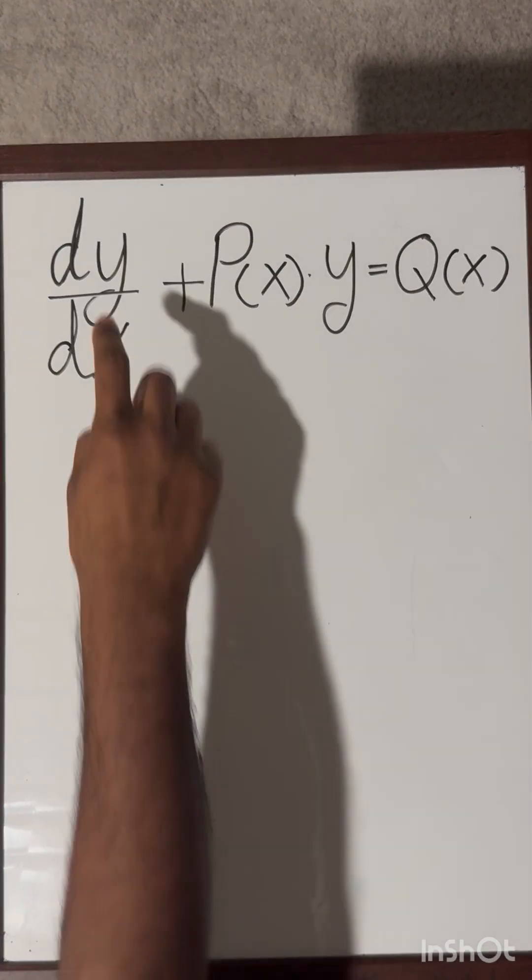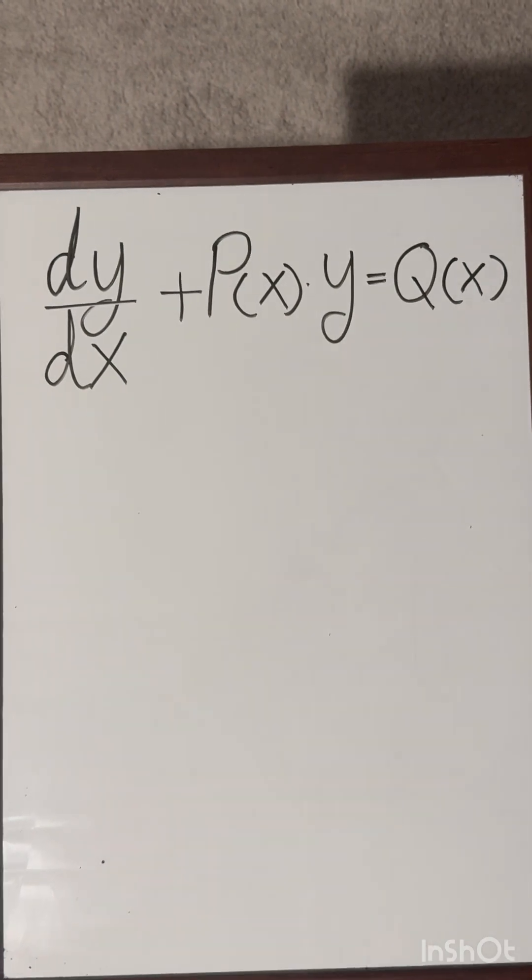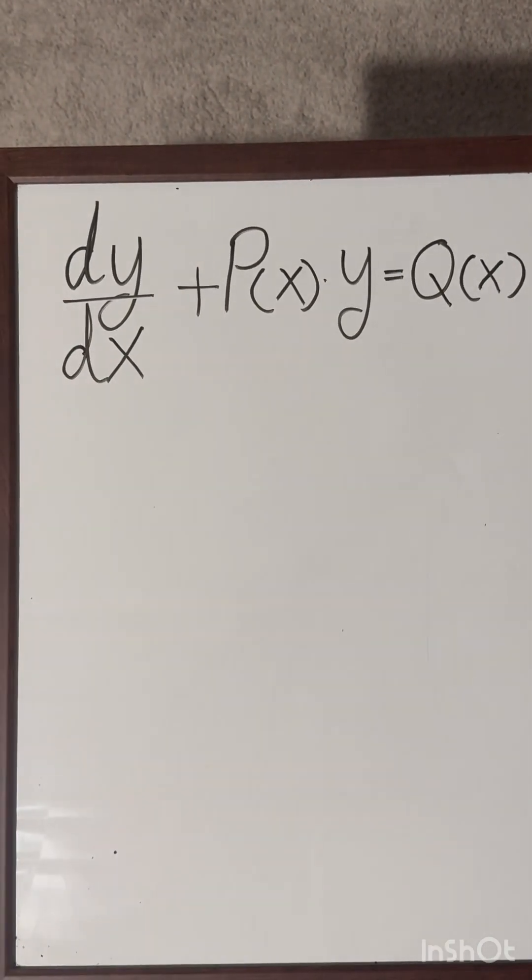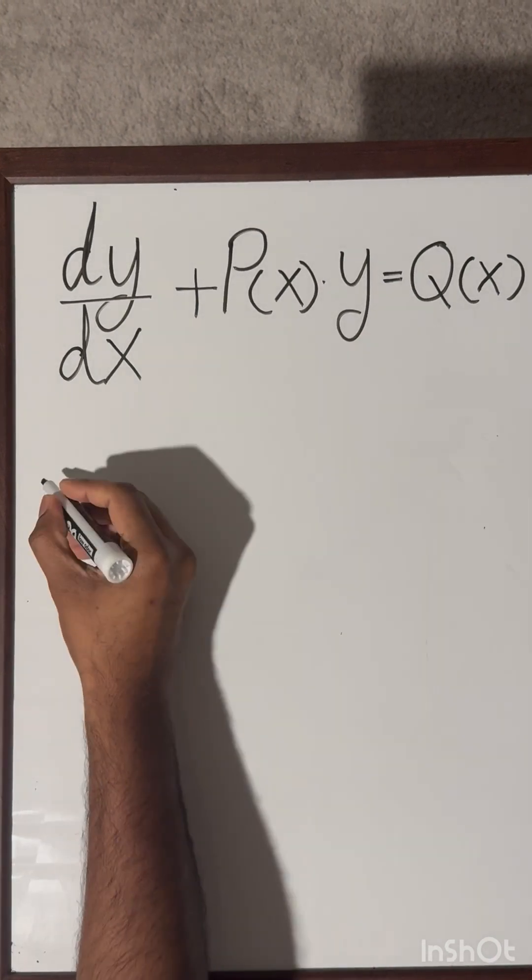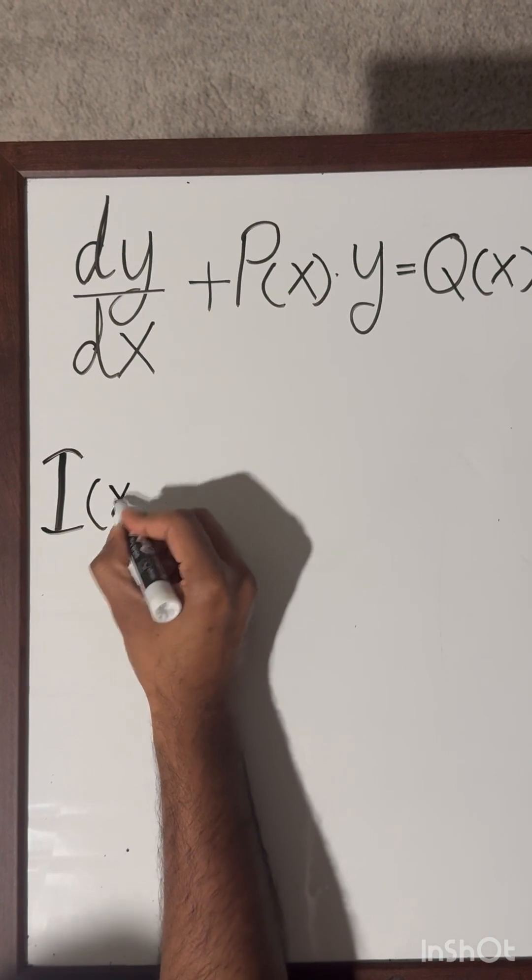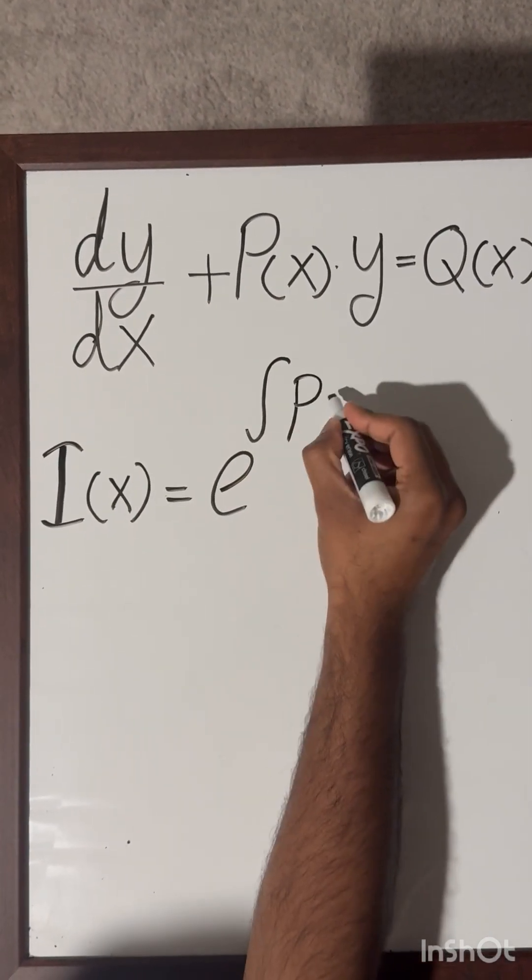Let's consider the standard form of a first order linear differential equation. We call it a standard form when the coefficient of dy over dx is 1. Then we can consider the function or the number in front of y as p of x.